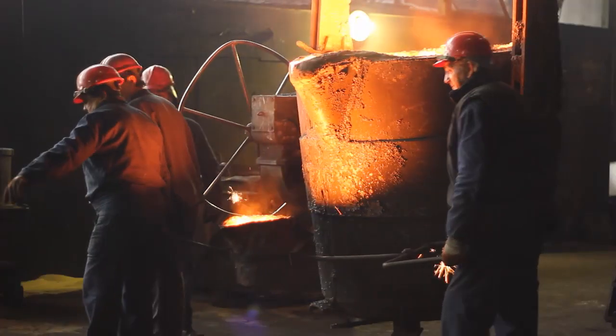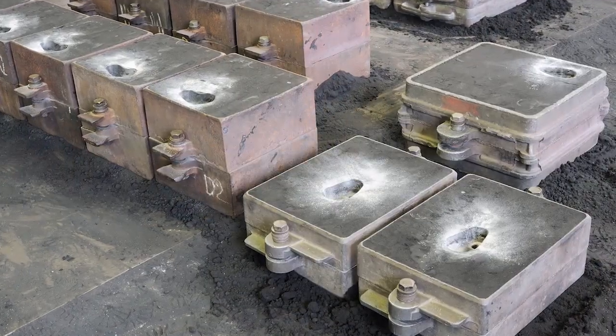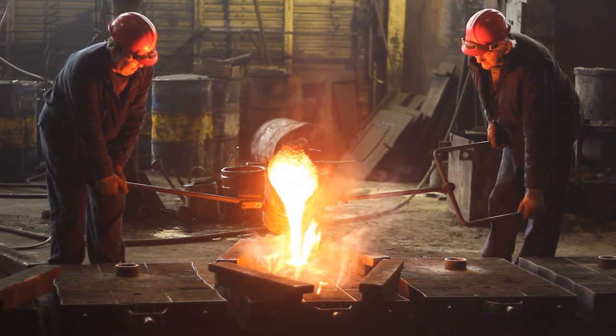Cast components are manufactured by pouring molten hot metal into a sand mold. The molten metal is then cooled and solidified, forming the part.